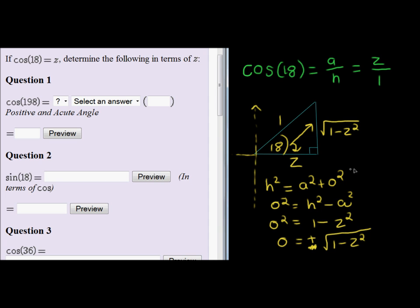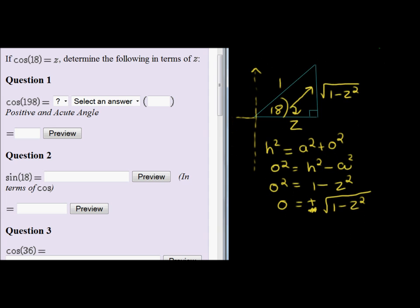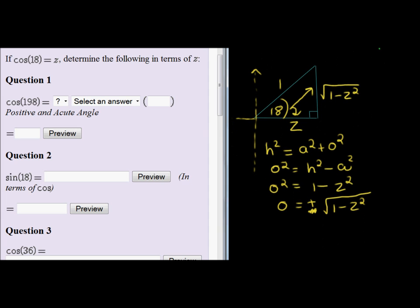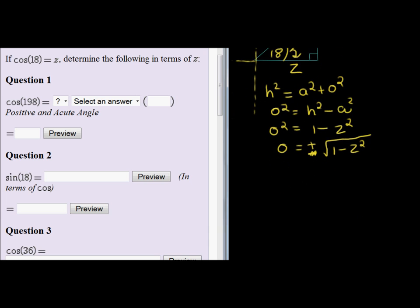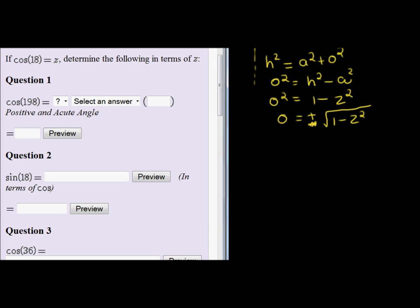Let's answer our first question. Our first question asks us to write cos(198°). cos(198°) is not in terms of 18°, so we first need to write it in terms of 18°.